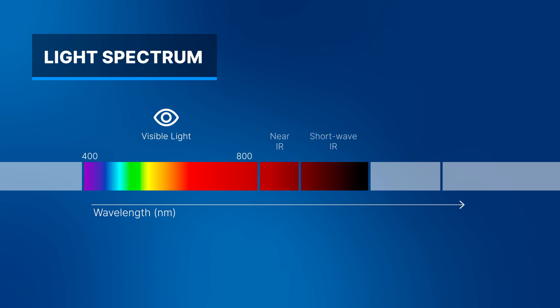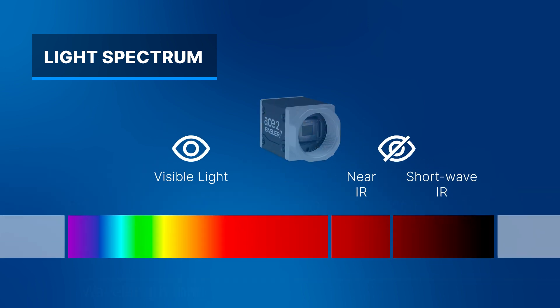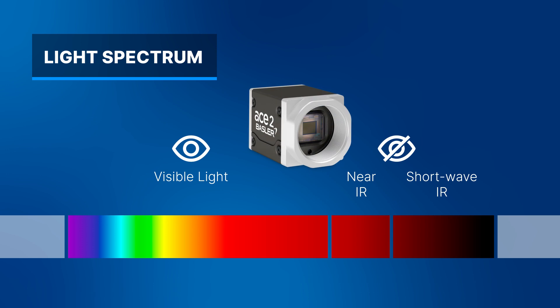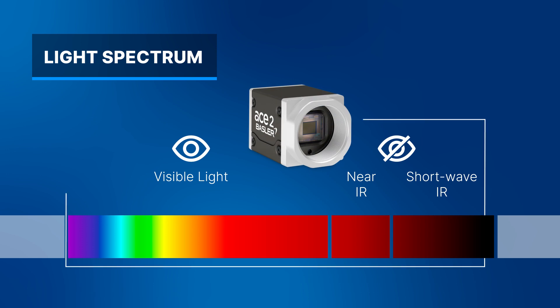Shortwave infrared light extends from 900 up to 2500 nanometers and is invisible to the naked eye. Basler's new ACE2X SWIR cameras featuring Sony's SenSWIR sensors cover both the visible and the invisible range, from 400 up to 1700 nanometers.